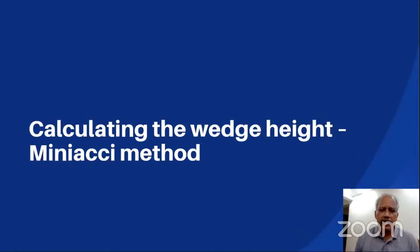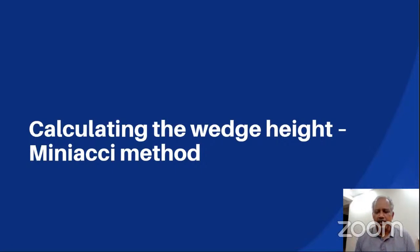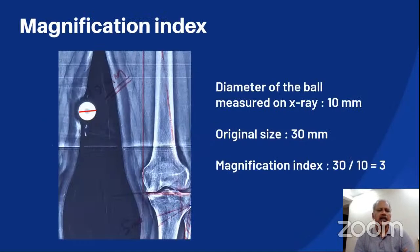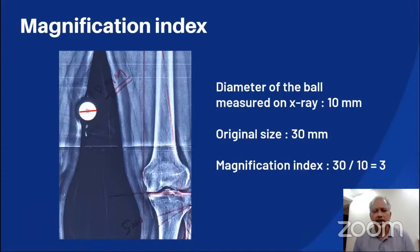This excess component from soft tissue laxity should not be corrected by bony correction — it should be subtracted before going for a bony correction. The aim of radiological planning is to derive in millimeters the height of the wedge to be removed or opened. The mini-IC technique can be used for radiological planning. We keep a metallic ball strapped to the thigh; the ball's diameter is 30 mm, and when measured on the x-ray it comes to around 10 mm. Hence, the magnification index is 30 divided by 10, equal to 3.